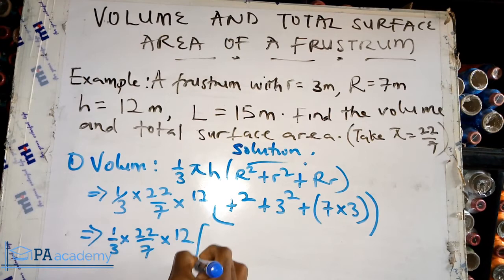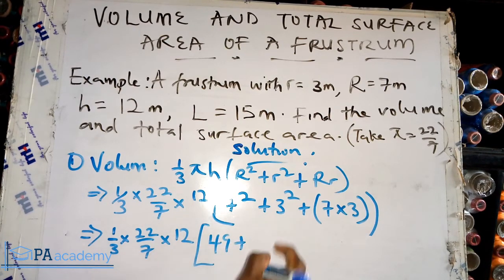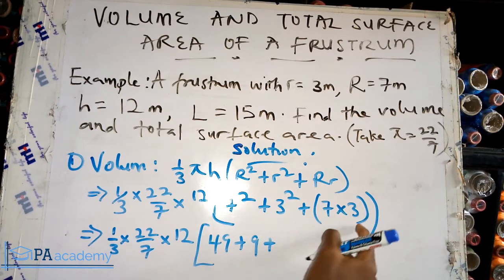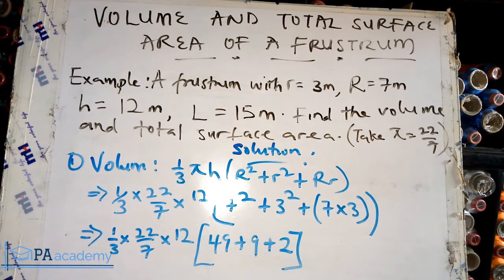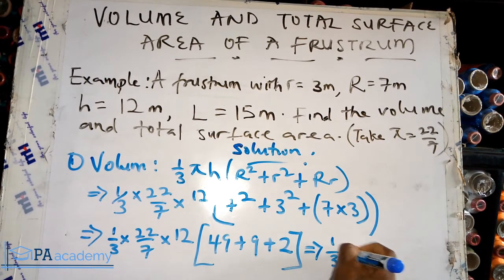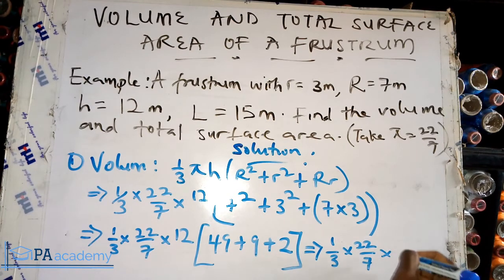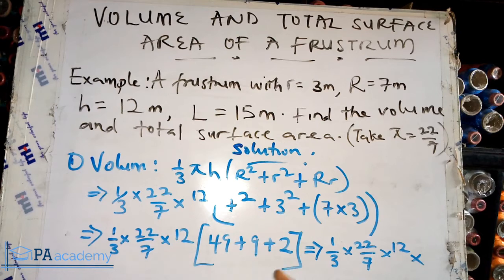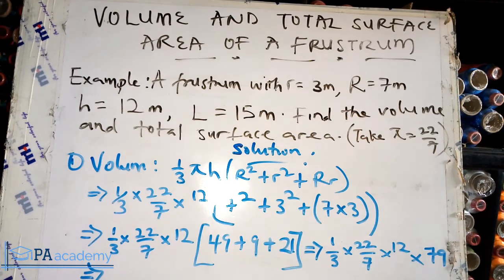Evaluating the bracket: 7 squared is 49, plus 3 squared gives 9, plus 7 times 3 gives 21. So 49 plus 9 plus 21 gives us 79. So we have one-third times 22 over 7 times 12 times 79. Now let's multiply 22 times 12 times 79.